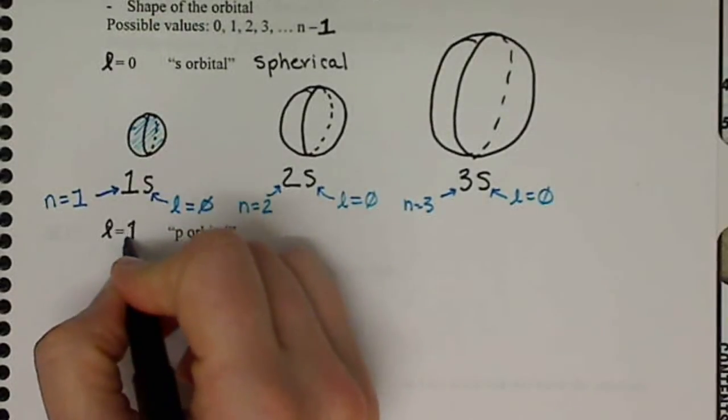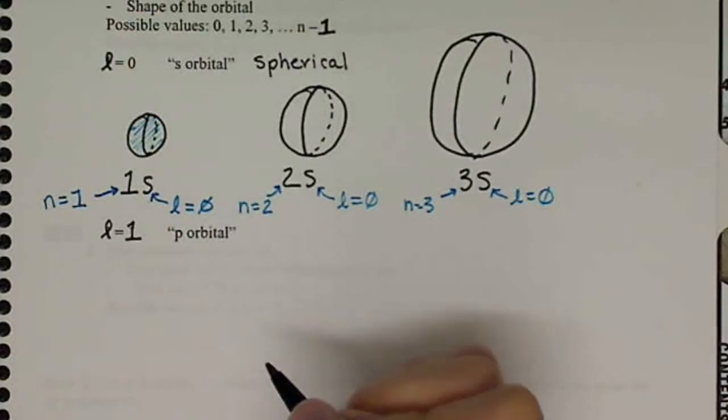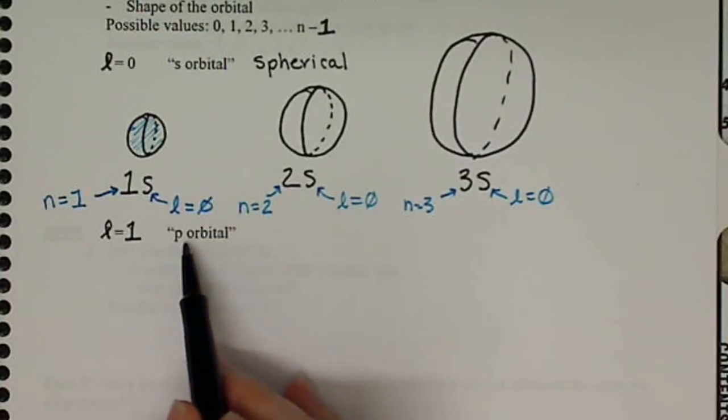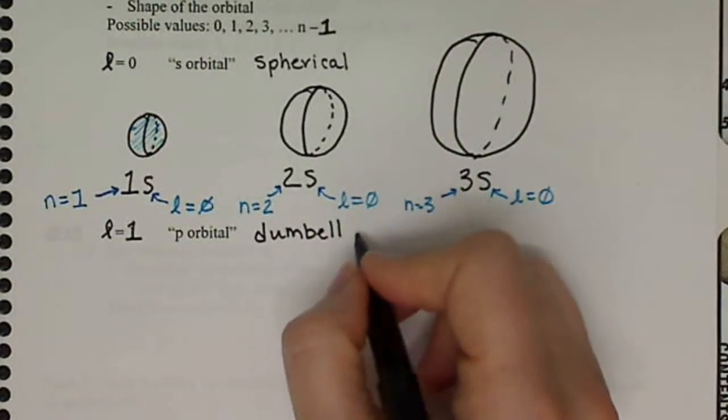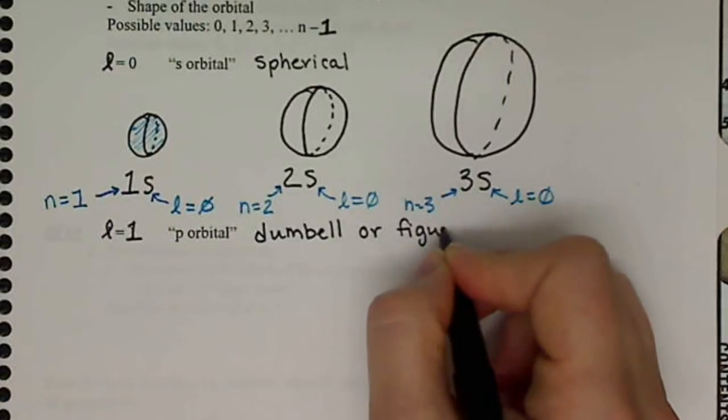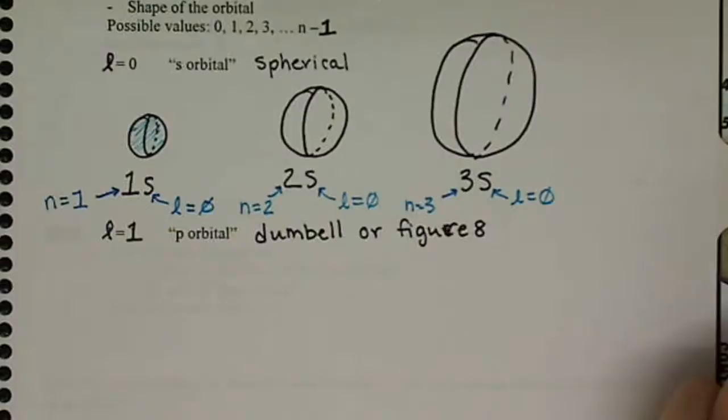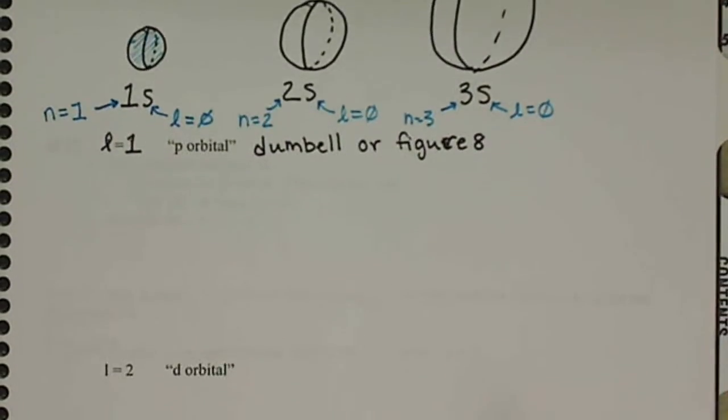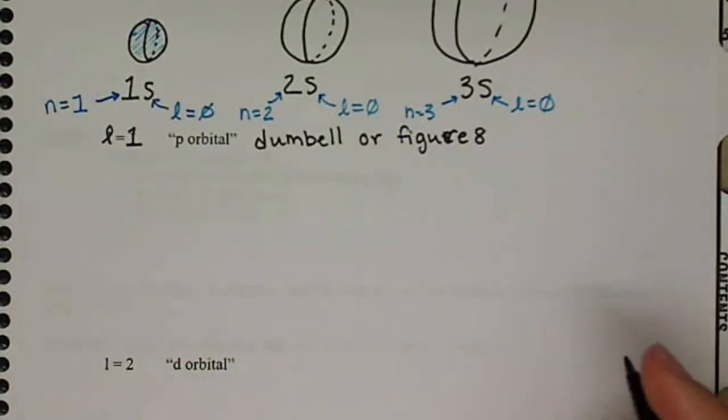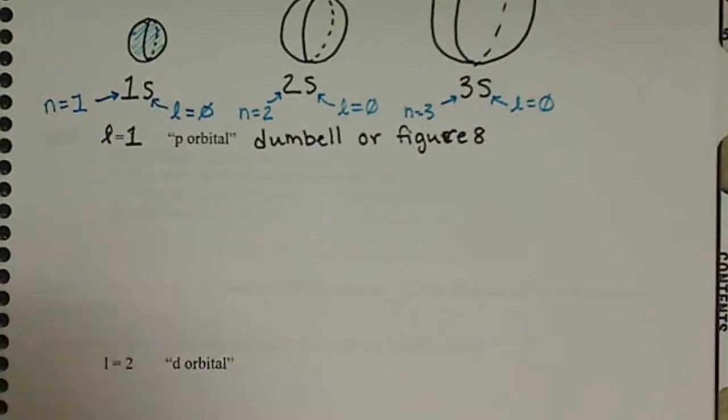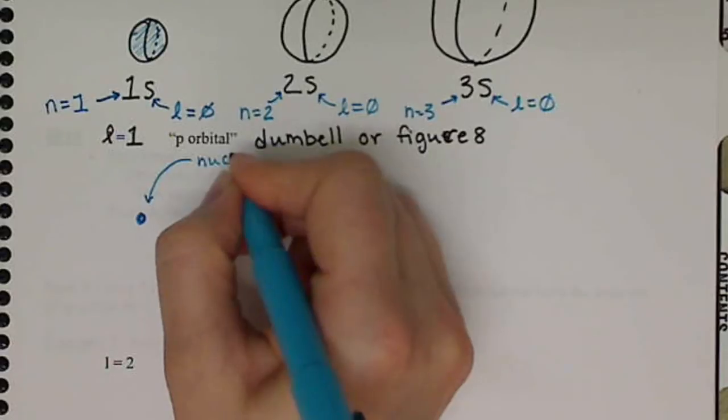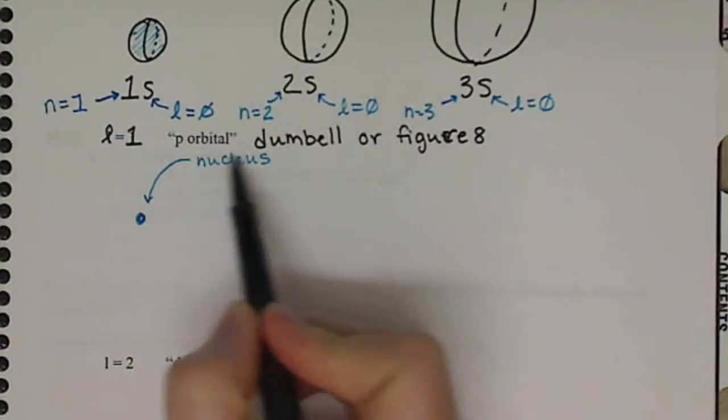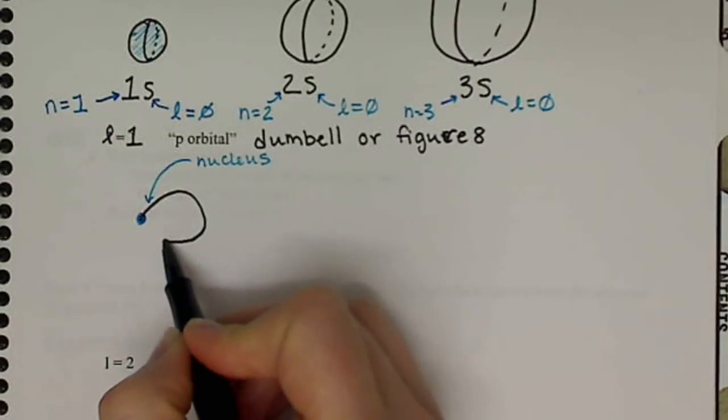If l is equal to 1, if you're looking for something to be confusing, you could see that distinguishing an l from a 1 is very difficult. But when l is equal to 1, this is our p orbital, and this is a dumbbell shape. Or you could think of it as a figure 8. But remember there's 3 dimensions, so figure 8 can be a little misleading. So what happens here is we have our nucleus in the center. And our shape, this dumbbell shape, has 2 lobes to it.